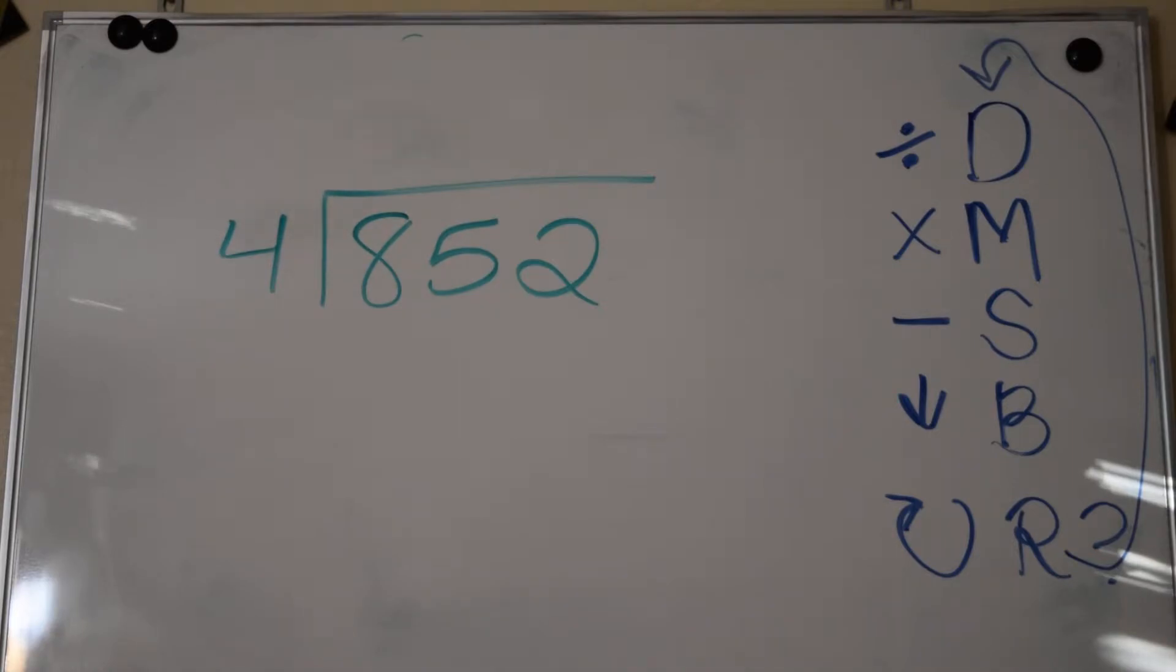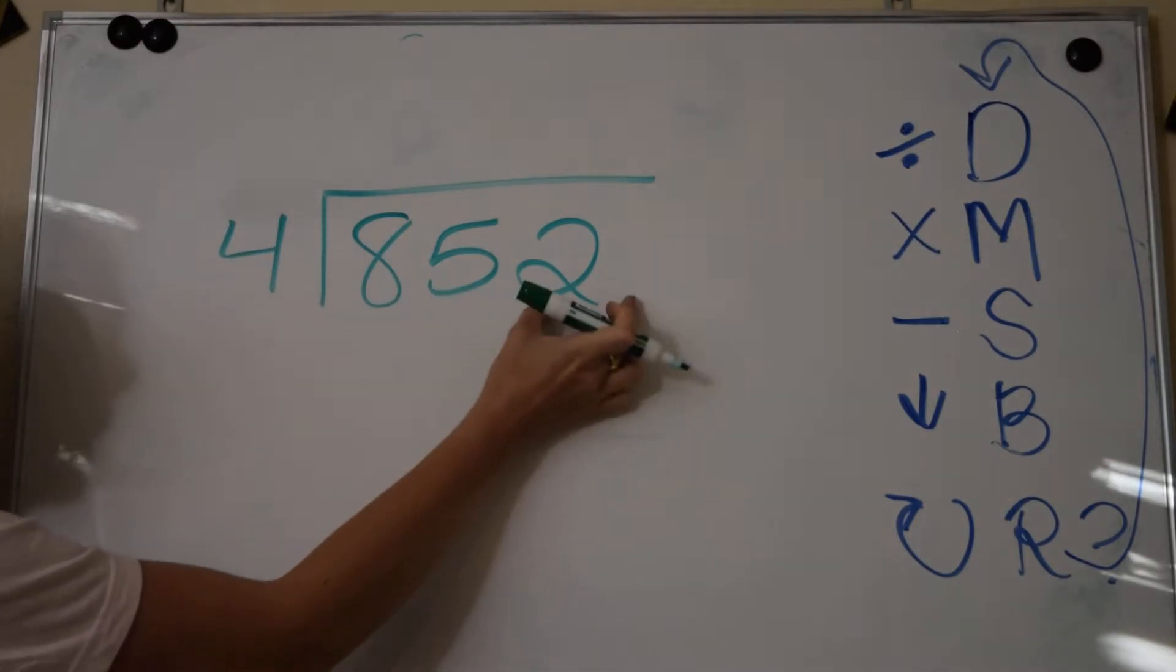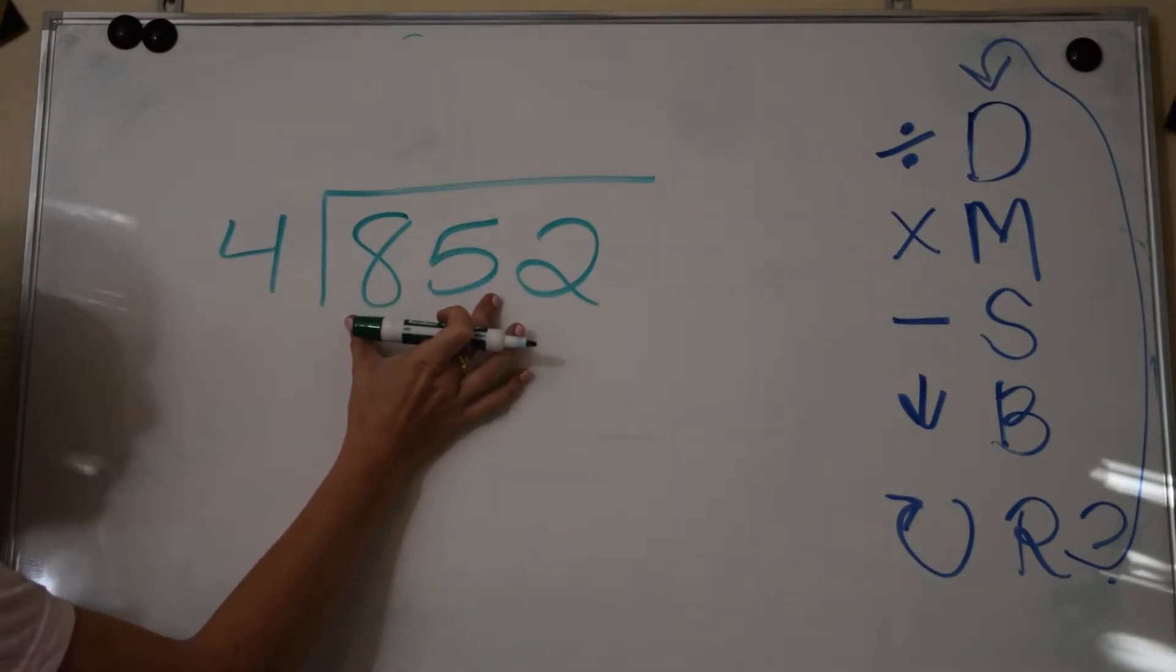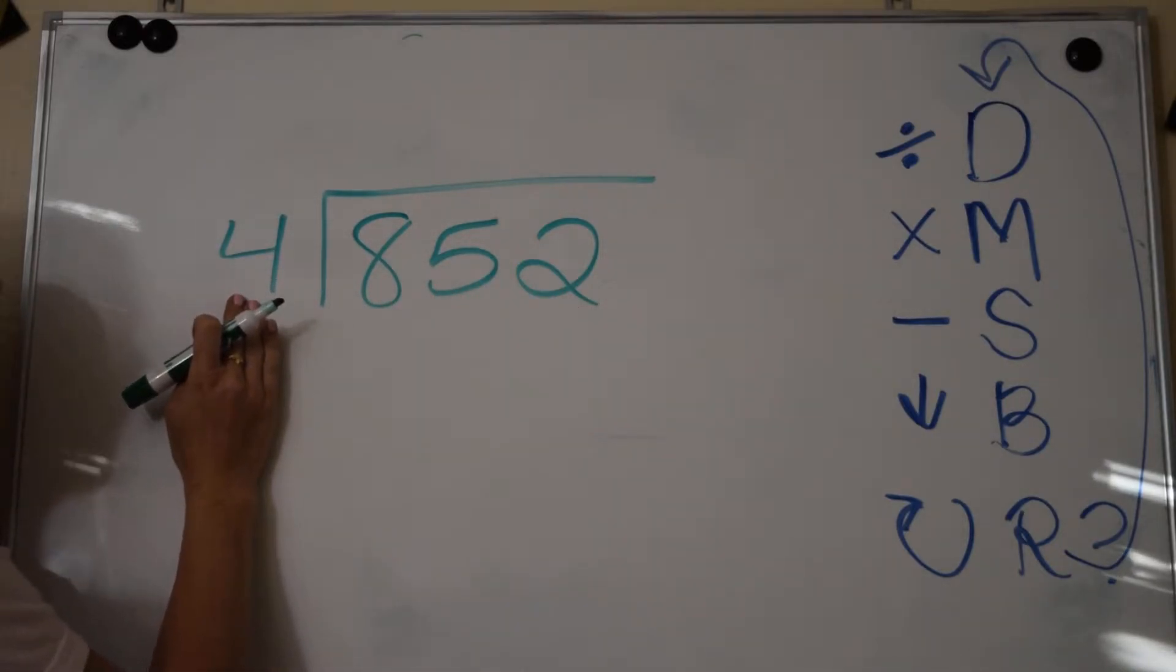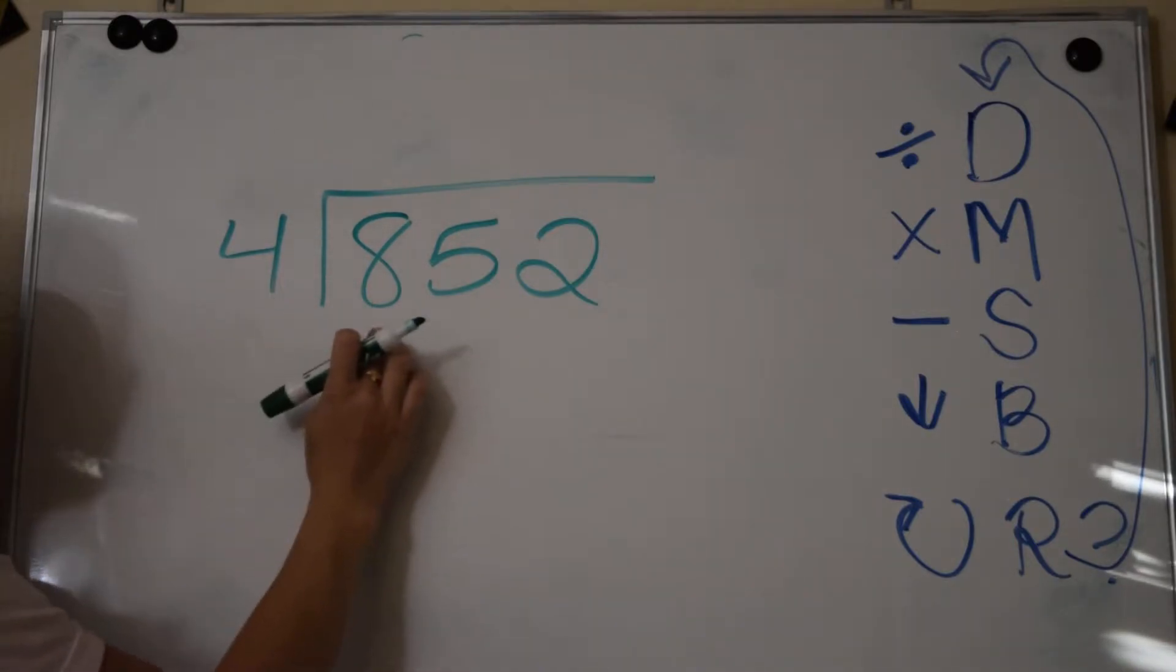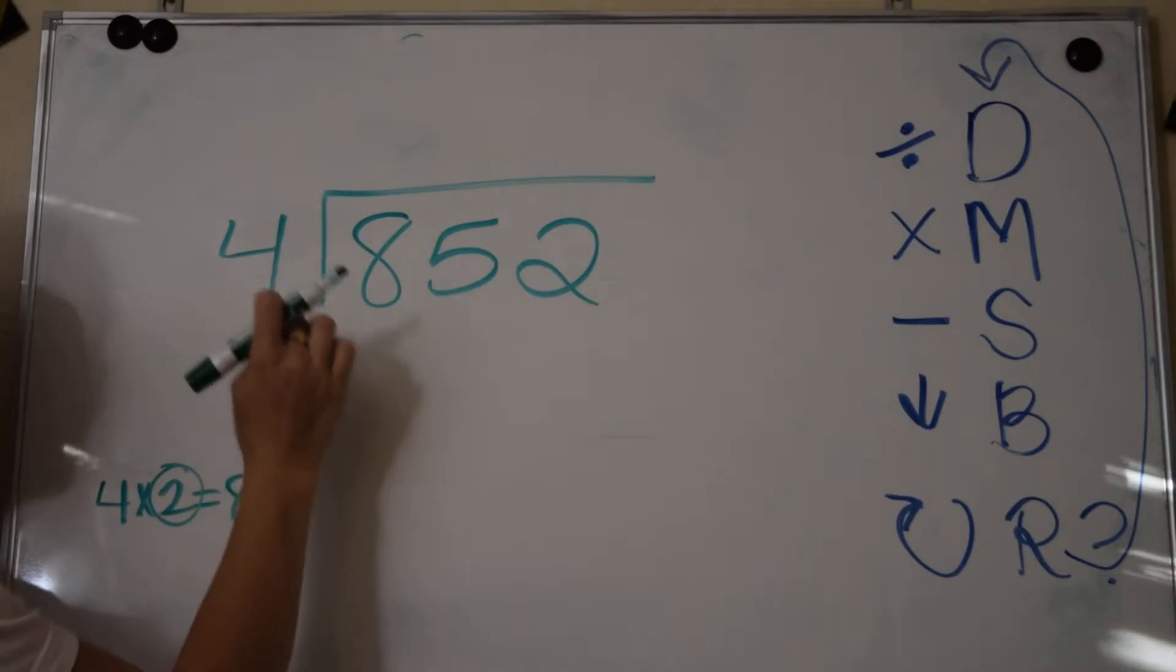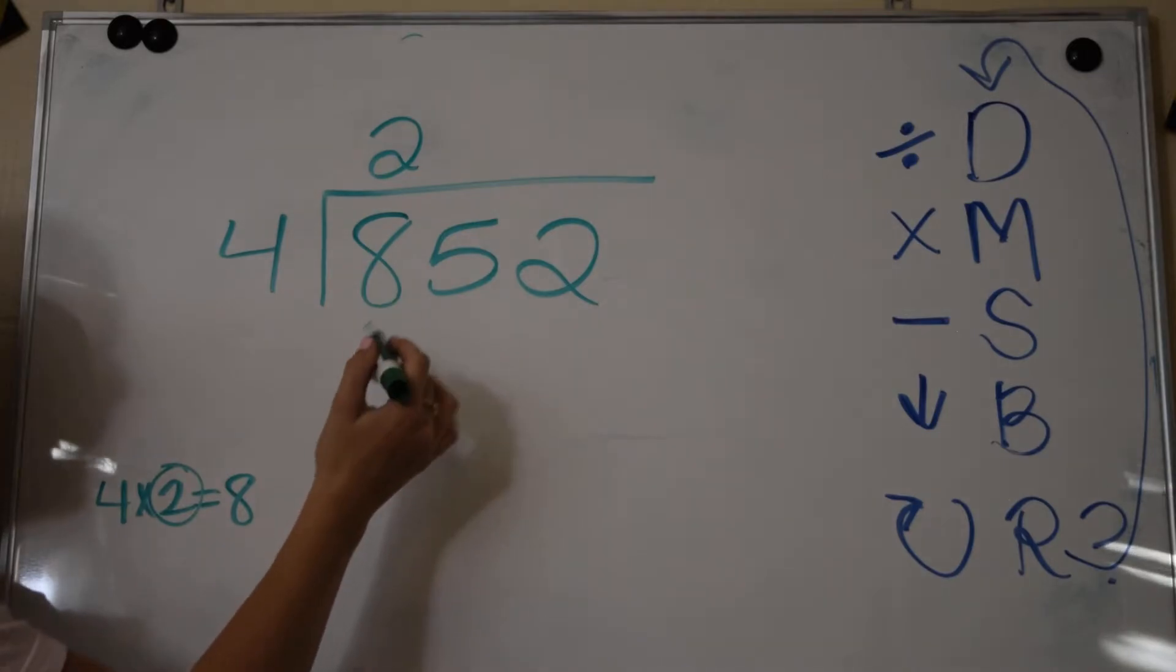The very first step is to divide. Always try and see if you can do one digit at a time. We have a really low divisor: 4 is going into 8. That happens to be a fact family I know. It can fit in twice because 4 times 2 is 8. So we put the 2 right above.